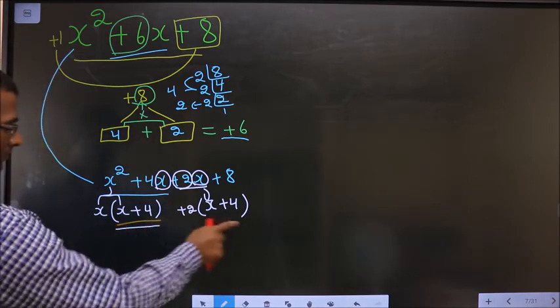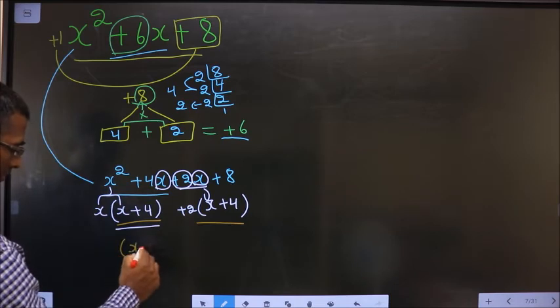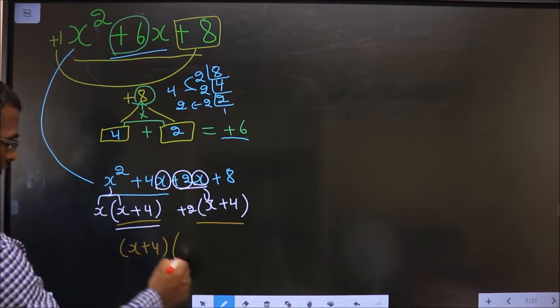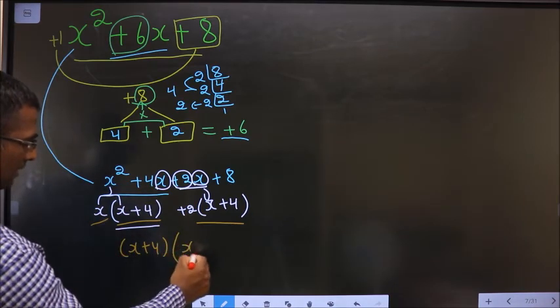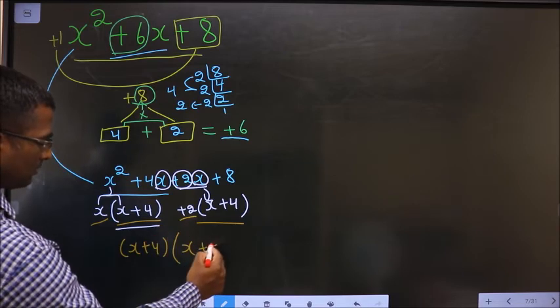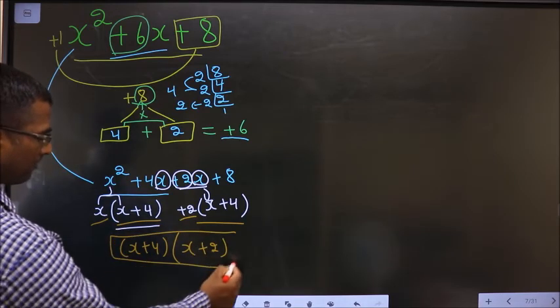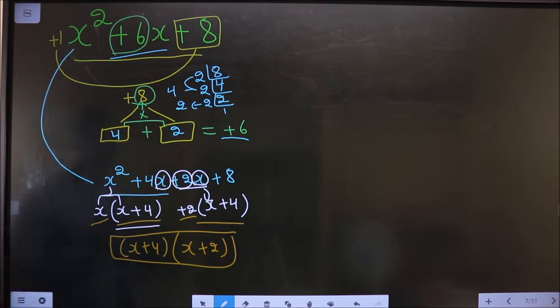Now take x + 4 common from both. So what is left here? X. And here left is +2. Thus I have factorized, and this is the answer.